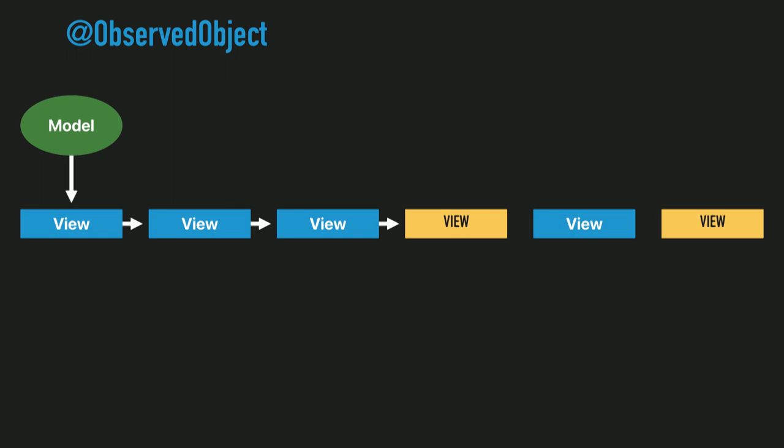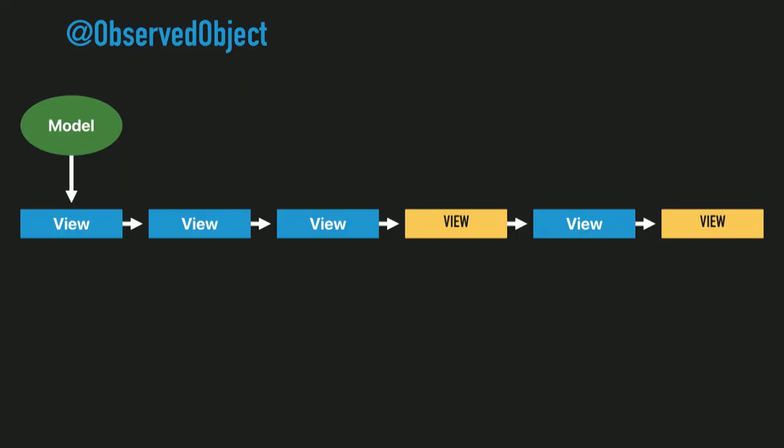The way you pass an observed object to other views is similar to UIKit with a view controller — you create an instance of your data model and pass it from view to view using initializers and instance variables. Notice that some views may not necessarily need the data, yet they still have to hold on to it like a courier along the way, which is okay but not particularly elegant.